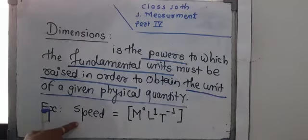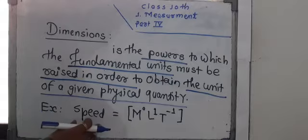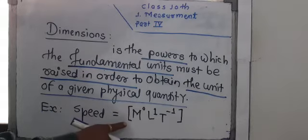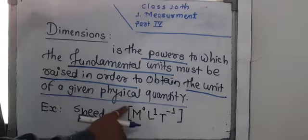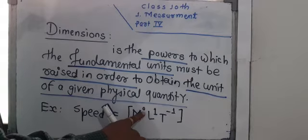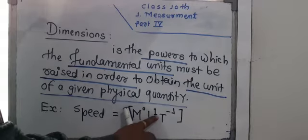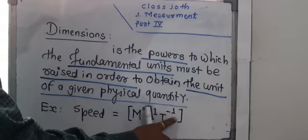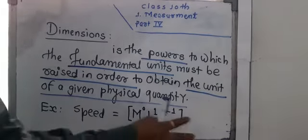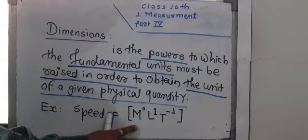For example, if we have to mention the dimension of speed, it is represented in square brackets as M raised to 0, L raised to 1, T raised to minus 1, bracket close. So this is the dimension formula used for speed.